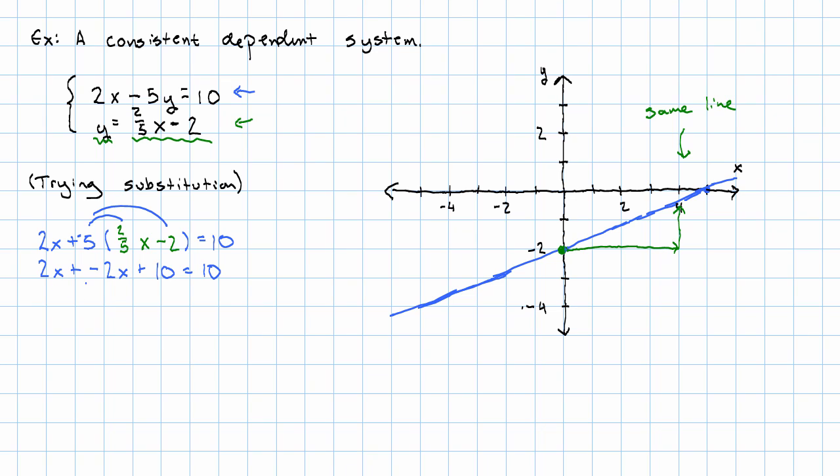Notice that when we combine like terms, 2x plus negative 2x, that's 0. We're left with 10 equals 10.